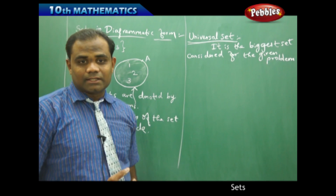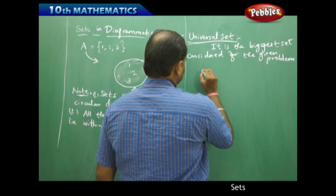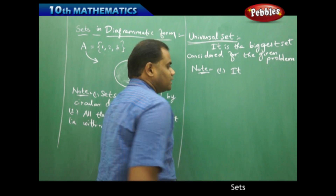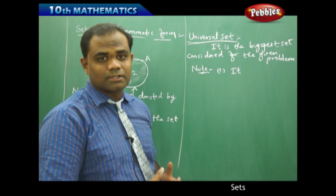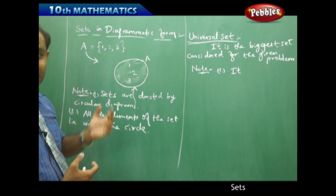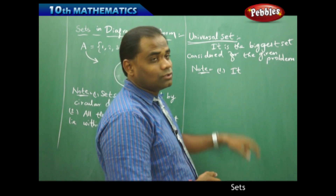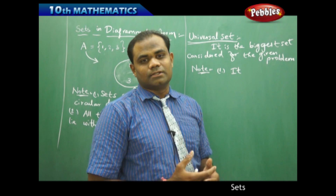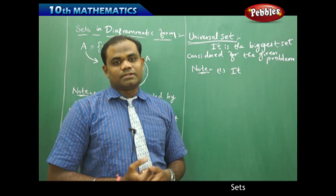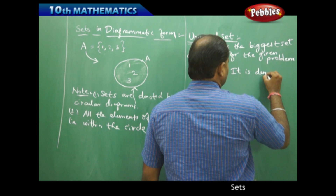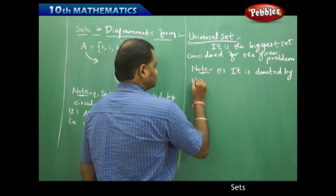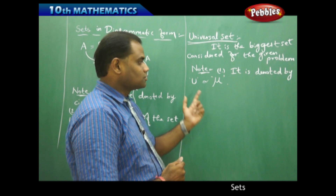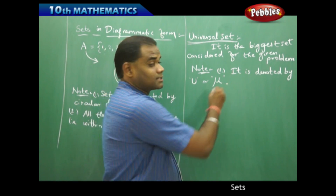Let's see how the universal set is represented in the diagrammatic form. First, it is denoted with either U or μ (mu). A regular set is represented with capital letters like A, B, C or X, Y, Z. Similarly, a universal set is represented with a fixed standard symbol. Seeing the symbol we can easily identify that the given set is a universal set. It is denoted by U, or sometimes mathematicians denote it with μ. Both mean the universal set — the biggest set of the given problem.